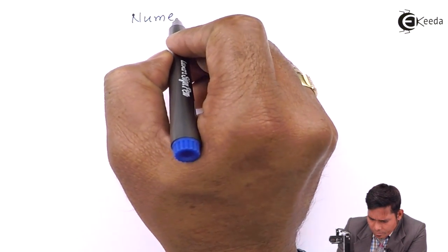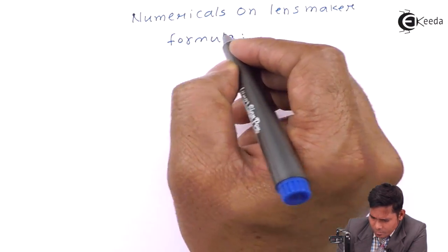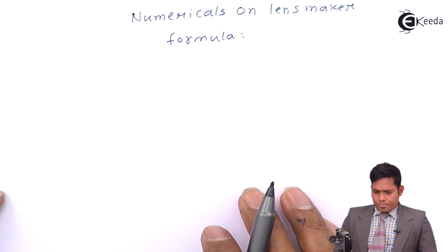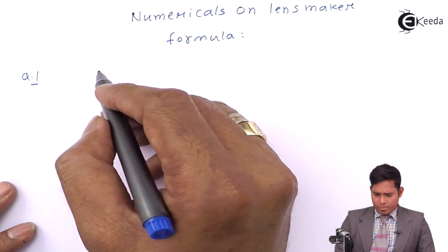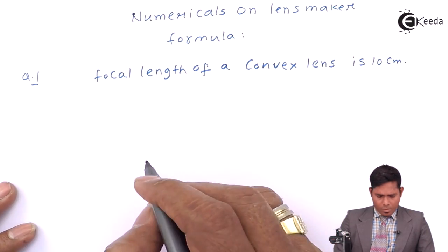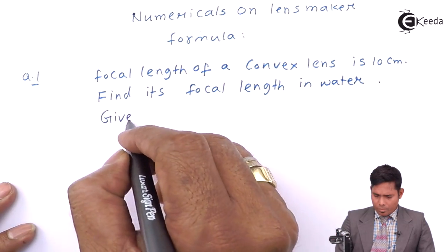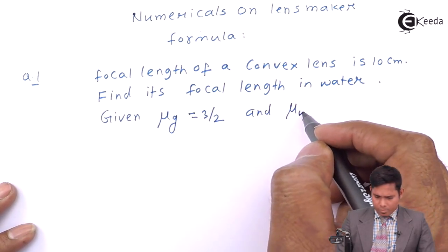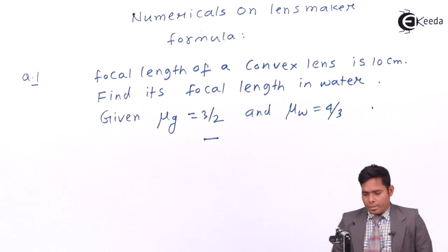Let us solve the numericals based on Lens and Lensmaker's formula. The question says that the focal length of a convex lens in air is 10 cm. Find its focal length in water. The focal length of a convex lens is 10 cm, and you have to find its focal length in water.